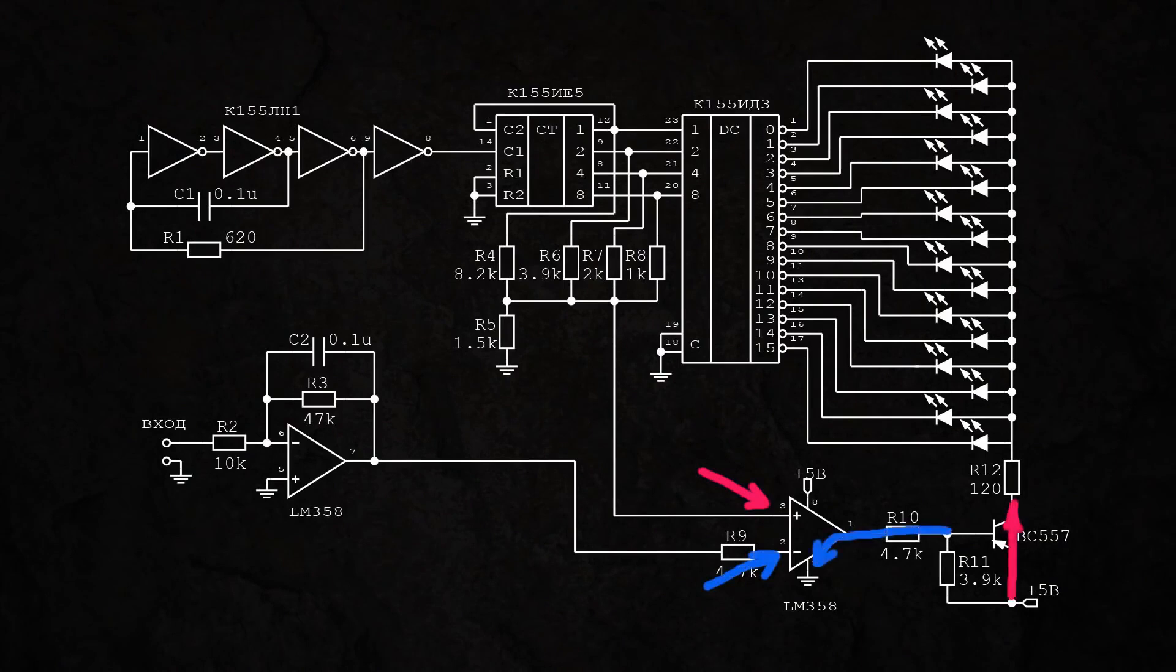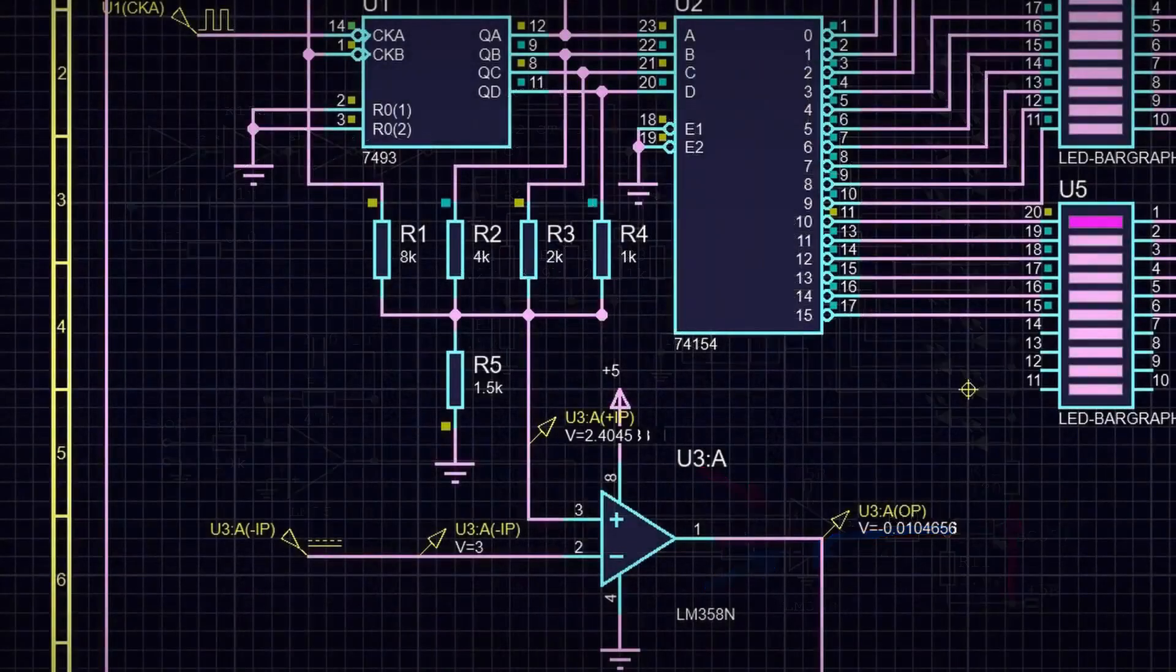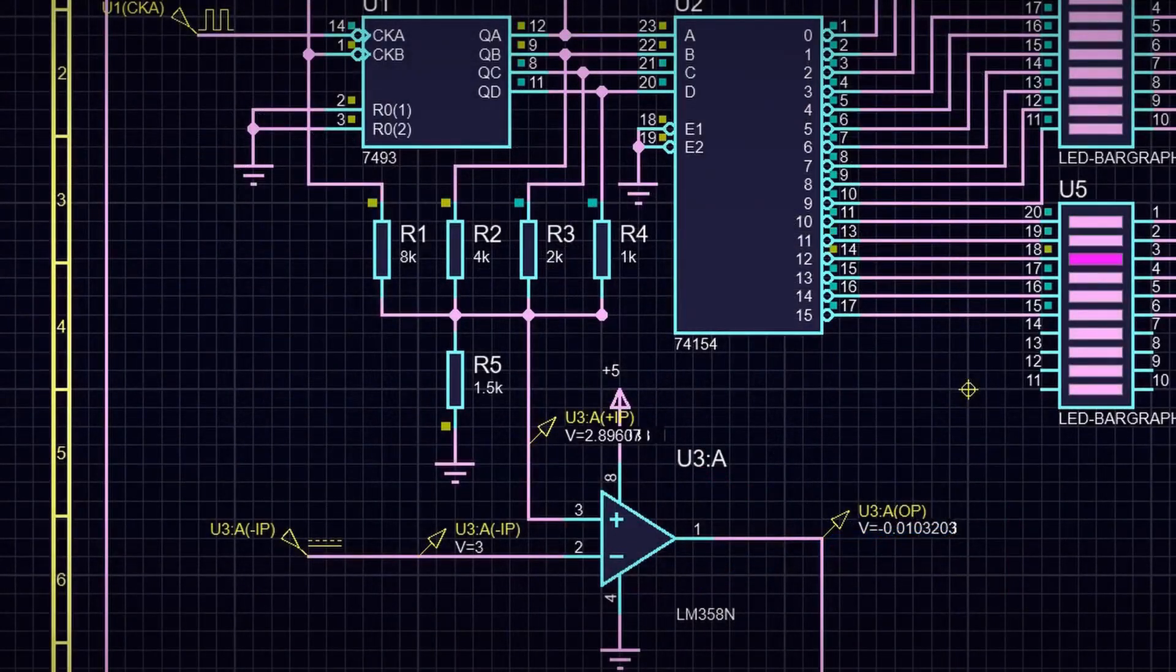The base of the transistor is grounded, and it turns on, allowing the supply voltage to pass through the current limiting resistor to the row of LEDs. And the LEDs will start lighting up one by one.